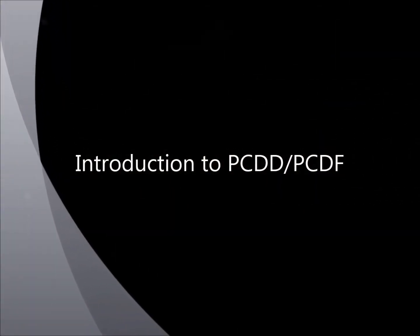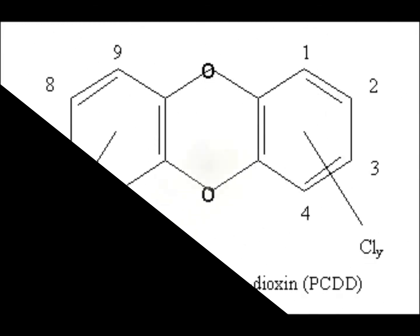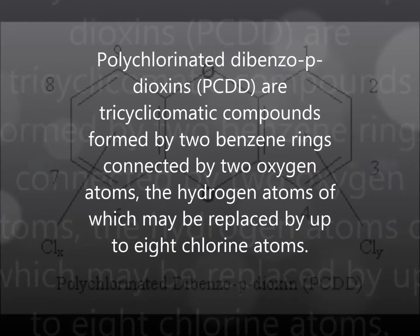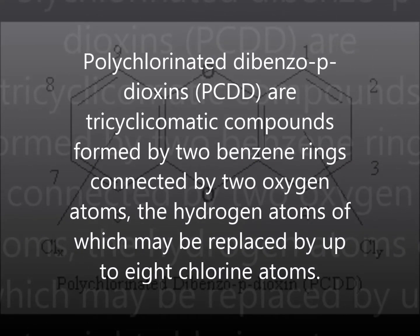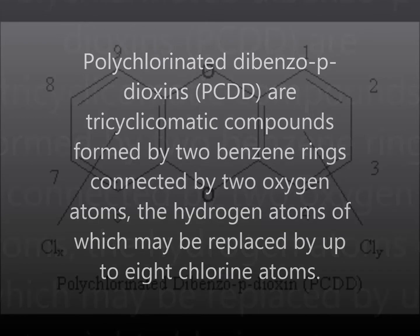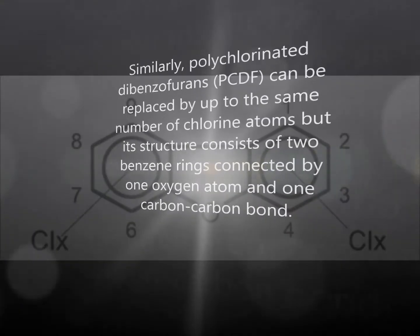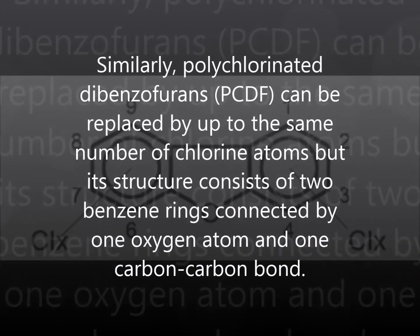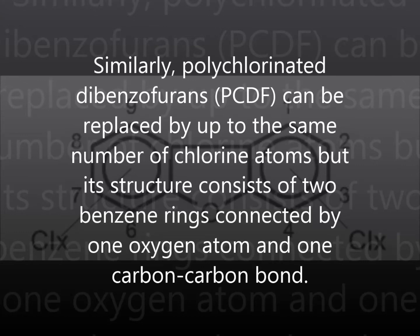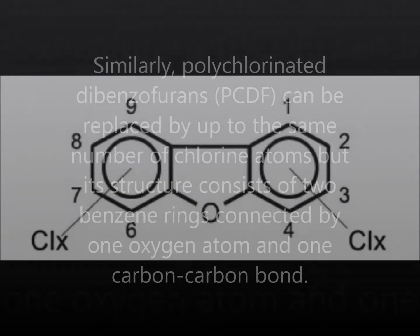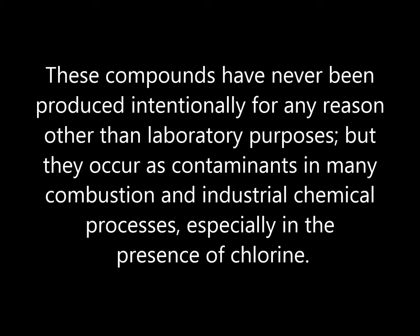Introduction to PCDD and PCDF. Polychlorinated Dibenzo-P-Dioxins (PCDD) are tricyclic aromatic compounds formed by two benzene rings connected by two oxygen atoms, the hydrogen atoms of which may be replaced by up to 8 chlorine atoms. Similarly, Polychlorinated Dibenzofurans (PCDF) can be substituted by up to the same number of chlorine atoms, but their structure consists of two benzene rings connected by one oxygen atom and one carbon-carbon bond. These compounds have never been produced intentionally for any reason other than laboratory purposes, but they occur as contaminants in many combustion and industrial chemical processes, especially in the presence of chlorine.